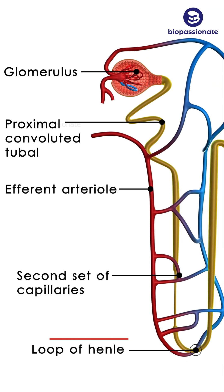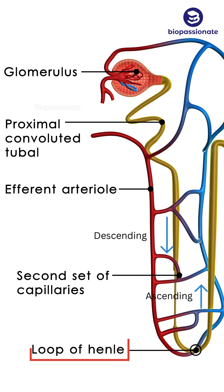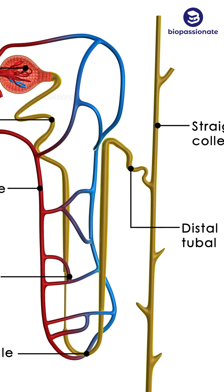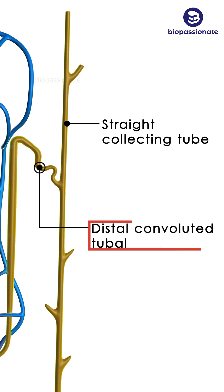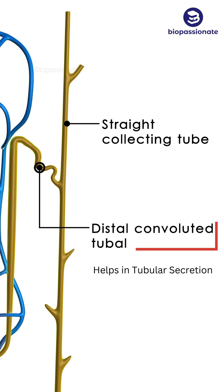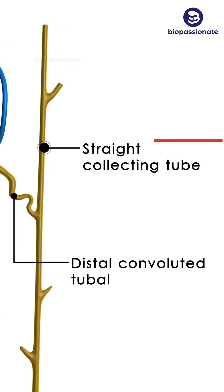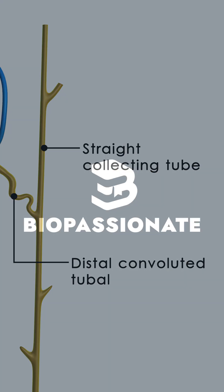A hairpin-shaped Henle's loop is the next part of the tubule, which has a descending and an ascending limb. The ascending limb continues as another highly coiled tubular region called the distal convoluted tubule, or DCT, where tubular secretion takes place. The DCTs of many nephrons open into a straight tube called the collecting duct.